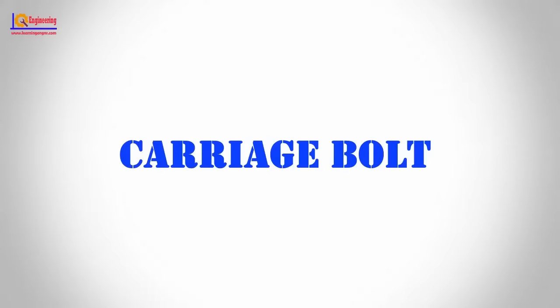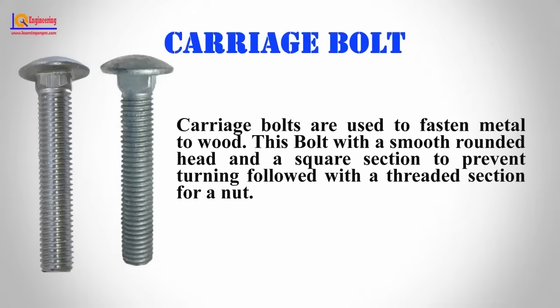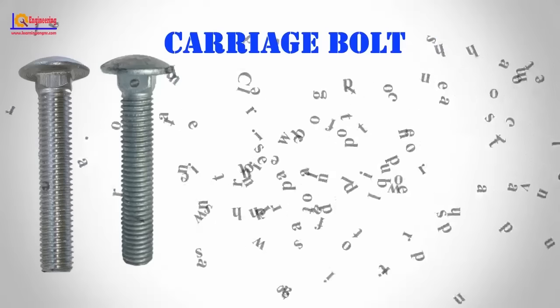Carriage Bolt: Carriage bolts are used to fasten metal to wood. This bolt has a smooth rounded head and a square section to prevent turning, followed by a threaded section for a nut.